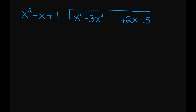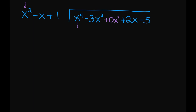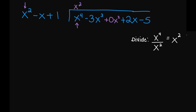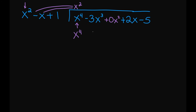Let's look at this example. Notice here there is a blank space between my x cubed and my x — we do not have any x squared term. You can leave a blank space or put a positive 0x squared as a placeholder so we can line up our variables carefully. Let's divide: what number do I need to multiply my x squared with to give me x to the 4th? That's x squared, because x squared times x squared gives x to the 4th. Then x squared times negative x gives us negative x cubed, and x squared times 1 gives us a positive x squared.